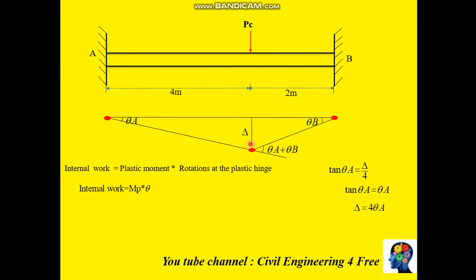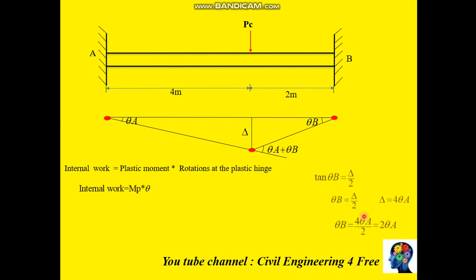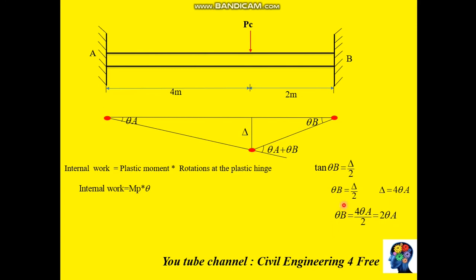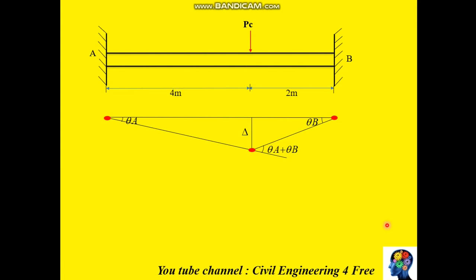For example, tan(theta a) equals delta divided by the adjacent length 4, and for a small angle, tan(theta a) equals theta a, hence delta equals 4 times theta a. In a similar fashion, you can determine theta b, which can be expressed in terms of theta a, so theta b equals 2 times theta a.